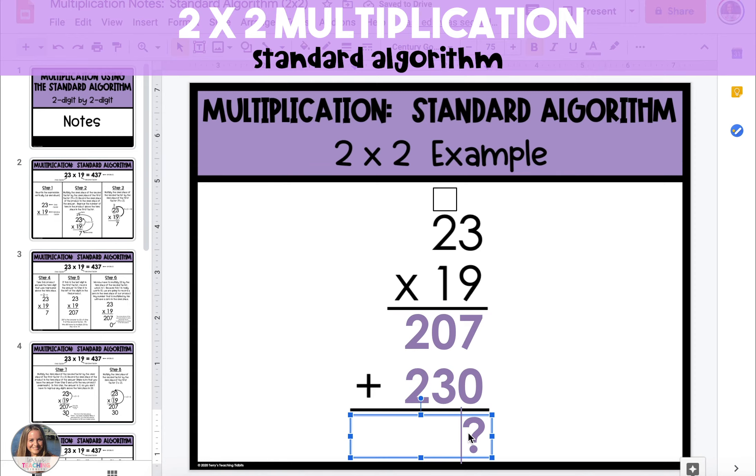And our final step is to add both of the products together to find a total product of 437.